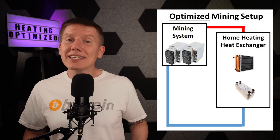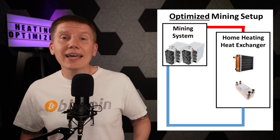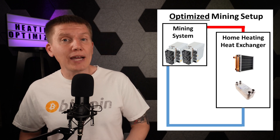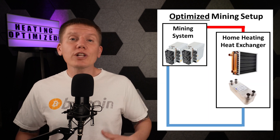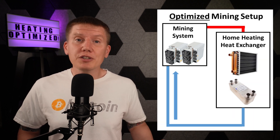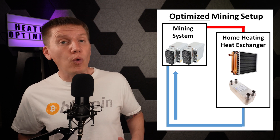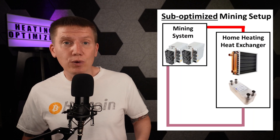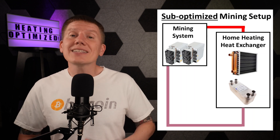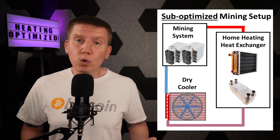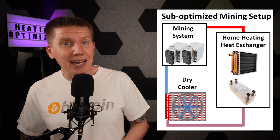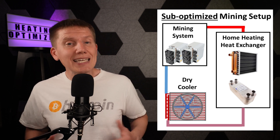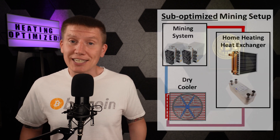One of the advantages of only running the miners when heat is needed is the system can be designed not to have a backup dry cooler — it can be designed to dump all of the heat into the house, fully cooling the fluid. If this design is chosen, it's really important to select the right size of home heating heat exchanger. If it's undersized, the miners will start to heat up and eventually overheat. It's a good idea to calculate or estimate how much heat you can deliver from your miners to your house, and then use a slightly larger heat exchanger. It is possible to add a dry cooler as a backup, but that's a lot of extra hardware and would eliminate one of the key advantages of only running miners when heat is needed.